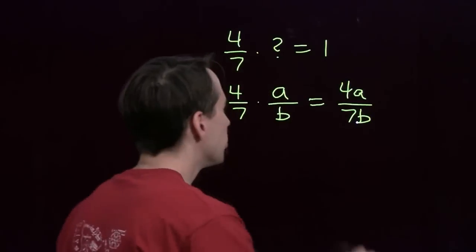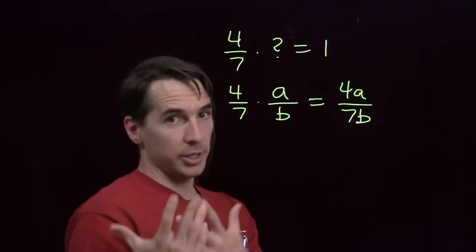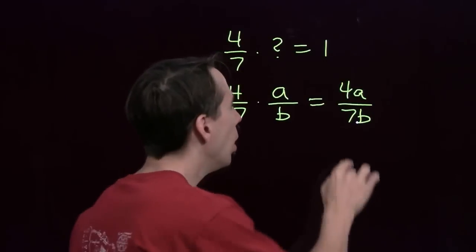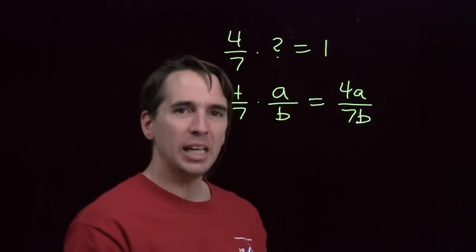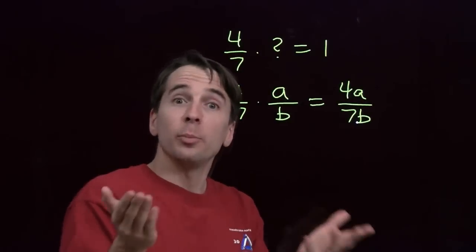No dividing by 0. So we want to choose a and b here that make the numerator and the denominator the same. And we have a pretty clear choice here. We can't choose 0, no dividing by 0. But we can make a = 7, and we make b = 4. That makes the top and the bottom both be a product of 4 and 7, so they'll be the same.